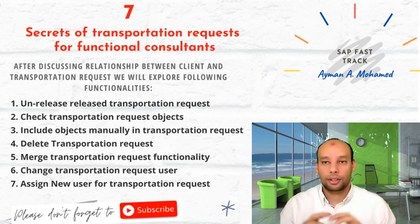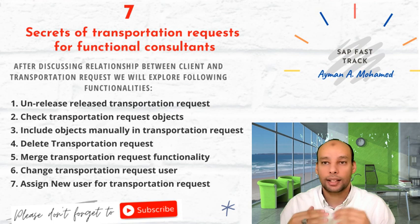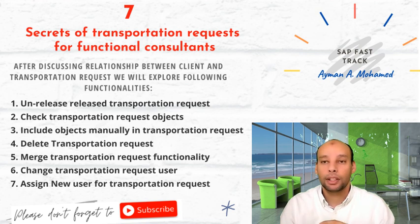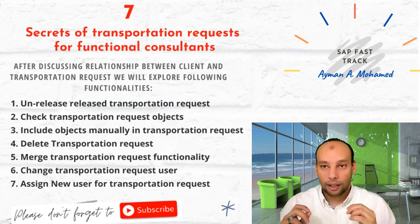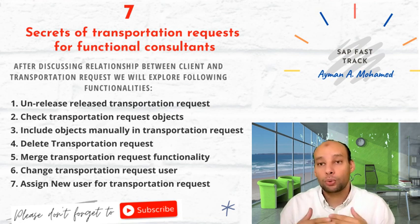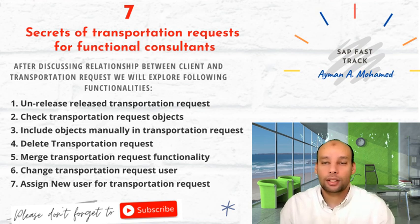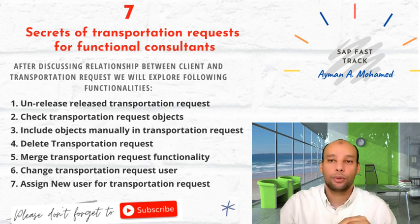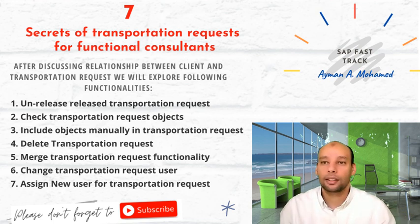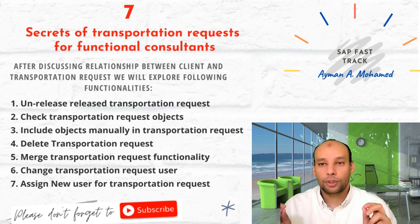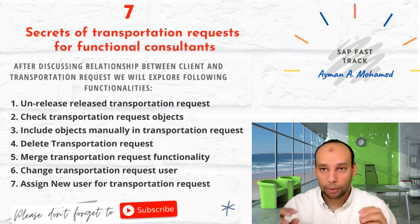I'm going to talk about the general concept of transportation requests and the business case related to each functional tip and trick — like how to release, how to un-release released transportation requests, how to merge transportation requests, how to display objects inside transportation requests, how to add extra objects, how to add or change users, and how to delete the transportation request. If you know these tips and tricks, you can use transportation request functionality much more effectively.